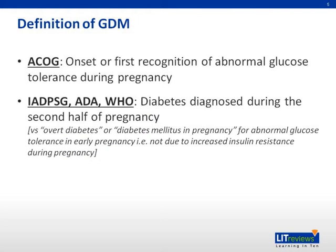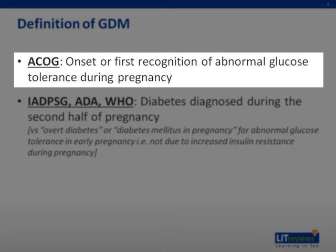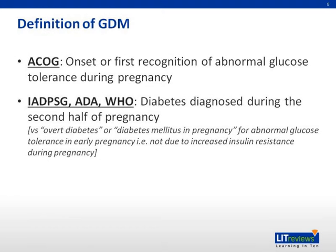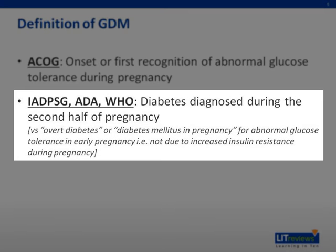The definition of GDM offered by the ACOG guidelines is the onset or first recognition of abnormal glucose tolerance during any part of pregnancy. This is different from those by other organizations, which talk about diabetes diagnosed only during the second half of pregnancy. For these other organizations, diabetes diagnosed in early pregnancy is not considered GDM.